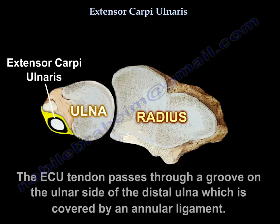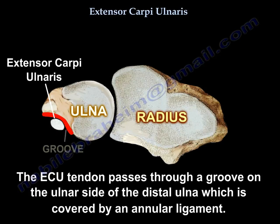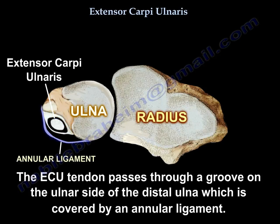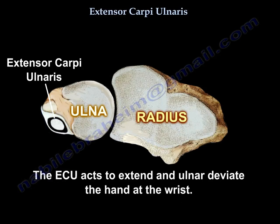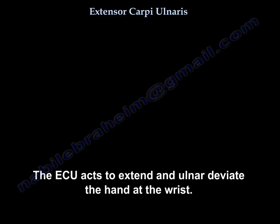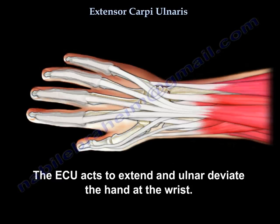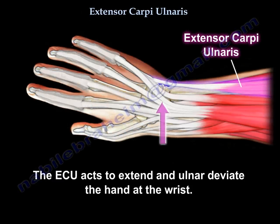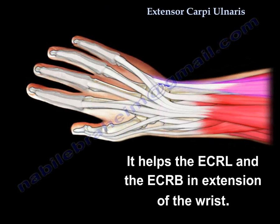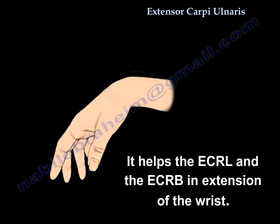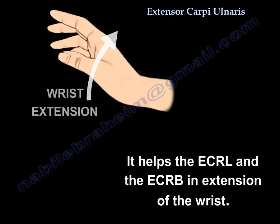The extensor carpi ulnaris tendon passes through a groove on the ulnar side of the distal ulna. This groove is covered by the annular ligament. The muscle acts to extend and ulnar deviate the hand at the wrist. It helps the extensor carpi radialis longus and brevis in extension of the wrist.